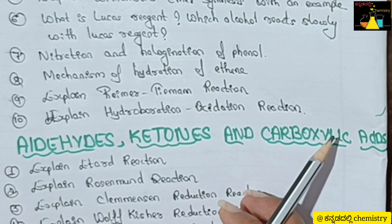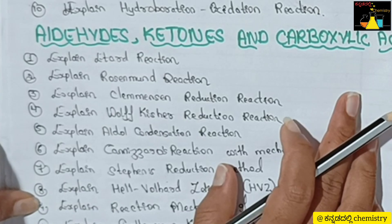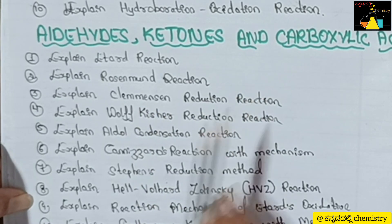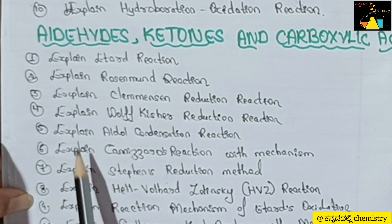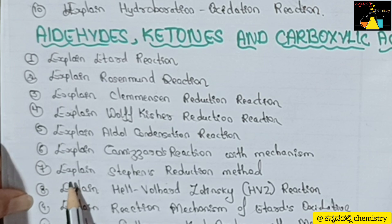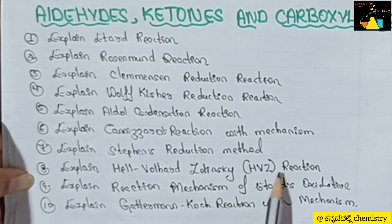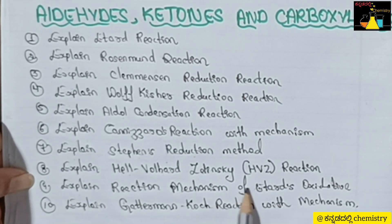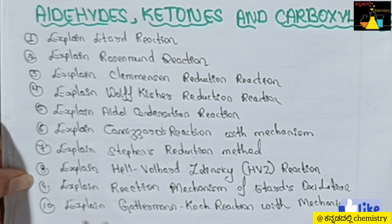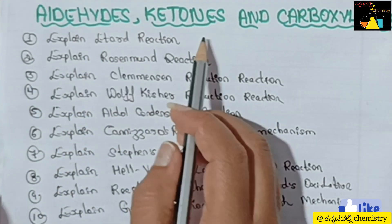If you understand the mechanism, any direct or indirect question will be easy to answer. Next, from Aldehydes, Ketones and Carboxylic Acids, the important questions are: explain Etard reaction, explain Rosenmund reaction, explain Clemmensen reduction reaction, explain Wolf-Kishner reduction reaction, explain Aldol condensation reaction, explain Cannizzaro reaction with mechanism, explain Stephen's reduction method, explain HVZ reaction, explain the reaction mechanism of Etard oxidation, and explain Gattermann-Koch reaction with mechanism.